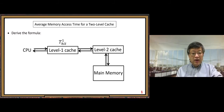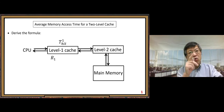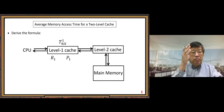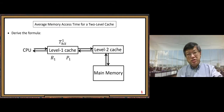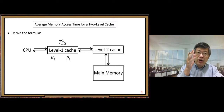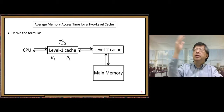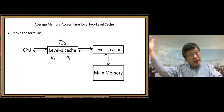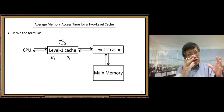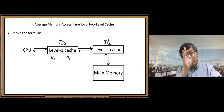We assume level one cache has hit time t1, miss rate r1, and miss penalty p1. The miss penalty p1 is understood this way: after we leave the L1 cache — because we cannot find the requested cache block — we have to get out of that small system, and we need to pay that p1 penalty.